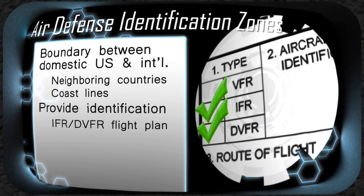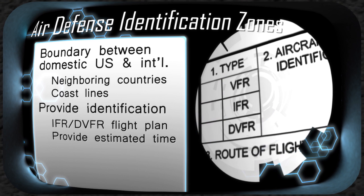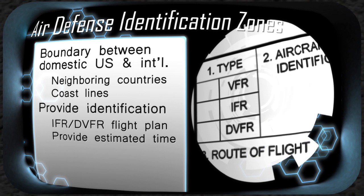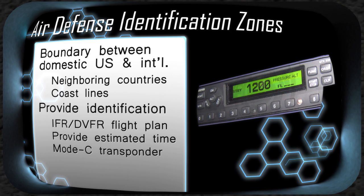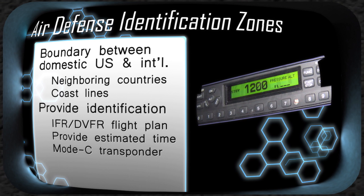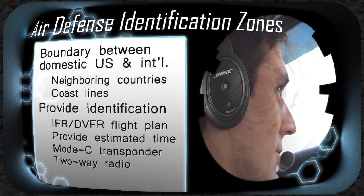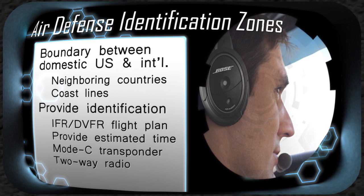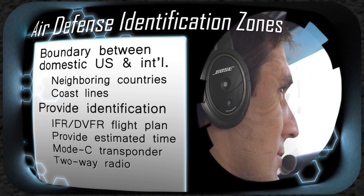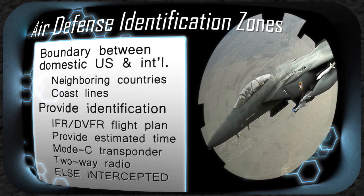As part of filing your flight plan with flight service, you will need to provide the estimated time you plan on passing through the ADIZ. In addition, the aircraft must have an operating Mode C transponder and the pilot must establish and maintain two-way radio communications with ATC in order to make periodic position reports. Failure to follow these rules may result in your aircraft being intercepted by U.S. security.